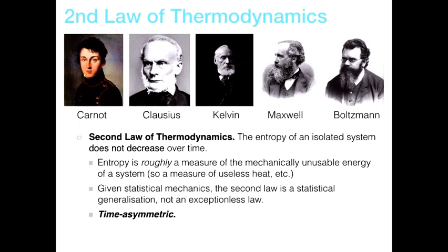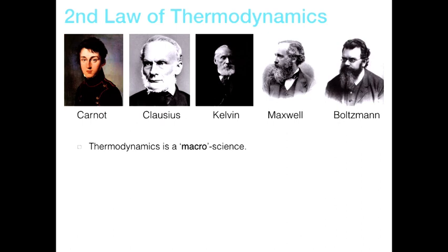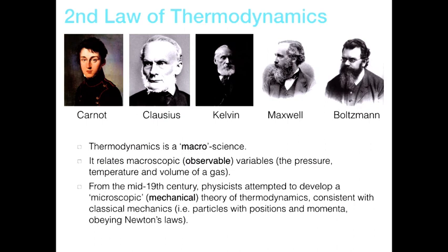Importantly, it is time-asymmetric. It says something about a property of systems that only increases over time and does not decrease. So it says different things about what can happen towards the future and what can happen towards the past. Thermodynamics is a macro science, concerned with macroscopic conditions — things we can describe in thermodynamic terms like pressure and volume. From the mid-19th century, physicists attempted to give a microscopic or mechanical theory of thermodynamics, in particular to understand the second law purely in terms of positions and momenta of classical particles.